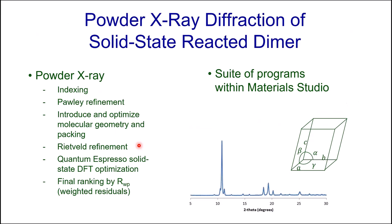We don't have single crystals but we have powdered crystals, so we can do powder X-ray diffraction using a fairly straightforward approach within Material Studio. We start by indexing the powder pattern, followed by Pawley refinement of candidate unit cells. Next we introduce and optimize the molecular contents, then perform successively finer geometry optimizations including Rietveld refinement, solid state DFT calculations, and finally calculate their powder X-ray diffraction patterns to compare to the experimental data and rank them based on weighted residuals.